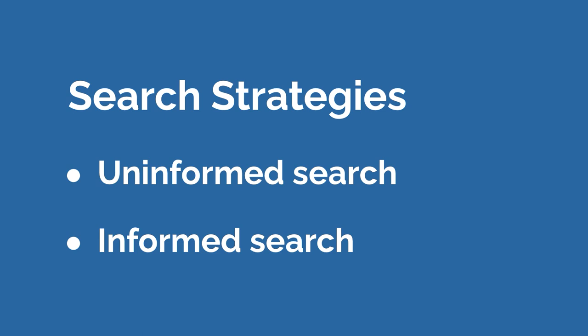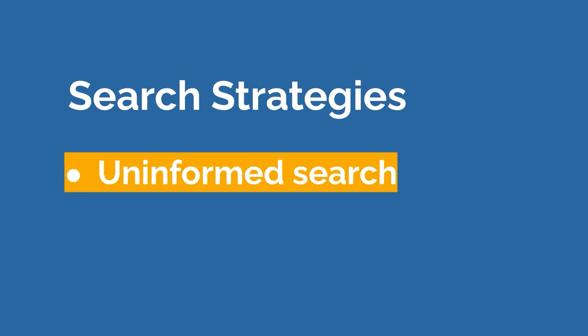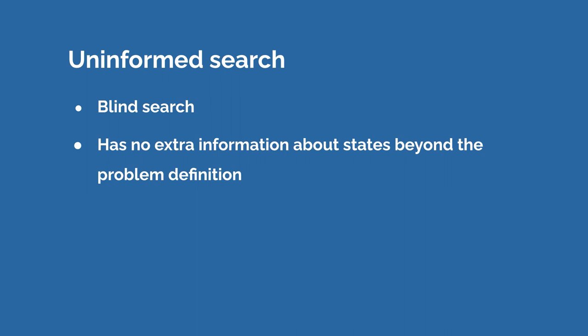These are the two types. We're going to begin with the uninformed search strategy. There are several types of uninformed search. Another way of thinking of uninformed search is that it's like a blind search, because the algorithm has no extra information about states beyond the problem definition. This is usually less efficient than informed search because the algorithm has no extra information to make its decisions. Sometimes uninformed search is the only solution though — sometimes you have no extra information, and sometimes you may be required to implement an uninformed search algorithm at the coding interview or to solve some problem.